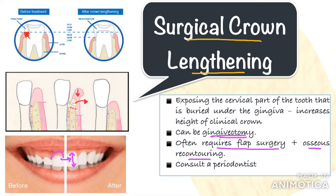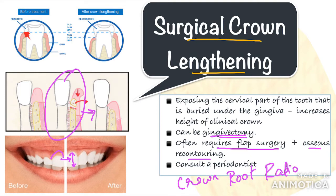There are two things to keep in mind when you opt for crown lengthening. One is the crown-to-root ratio — make sure there is at least a minimum crown-to-root ratio of 1:1, because any less than that will drastically reduce the prognosis of the tooth. Another thing to remember, especially in the aesthetic zone, is the gingival architecture of the adjacent teeth. You wouldn't want the gingival zenith of one tooth higher than the other — it wouldn't be very pleasing.